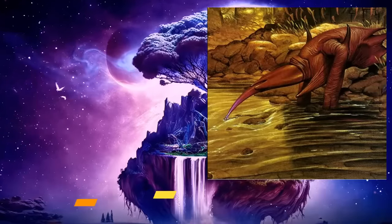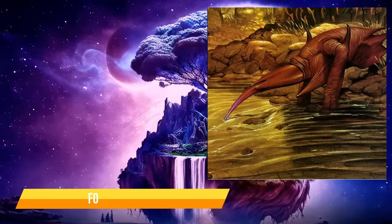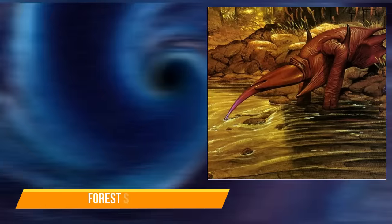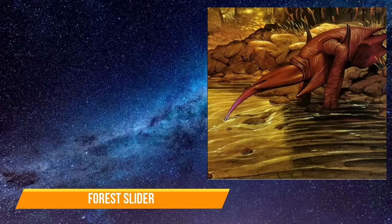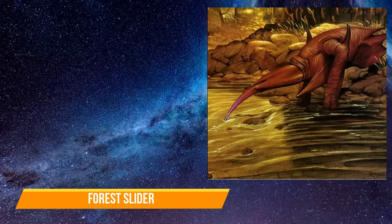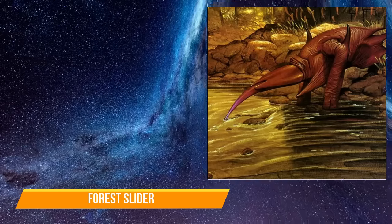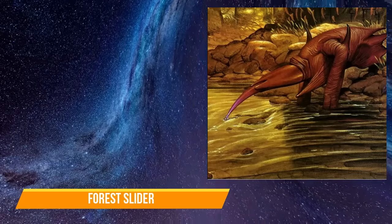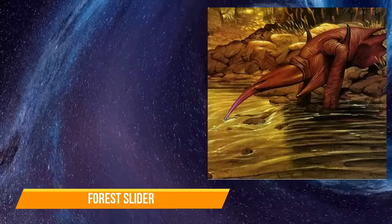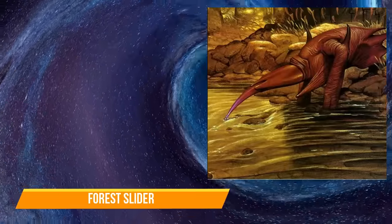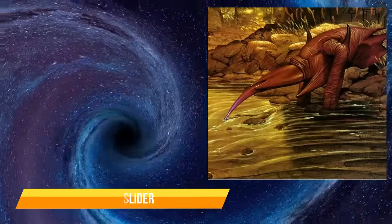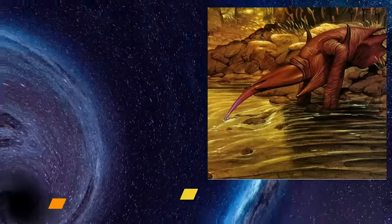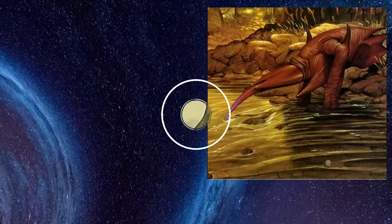Forest Sliders are faunal organisms with an interesting life cycle. When born, they are quadrupeds, yet as their rear skid hardens as they mature with age, their hind limbs shrivel and eventually fall off, transforming them into bipedal beings.